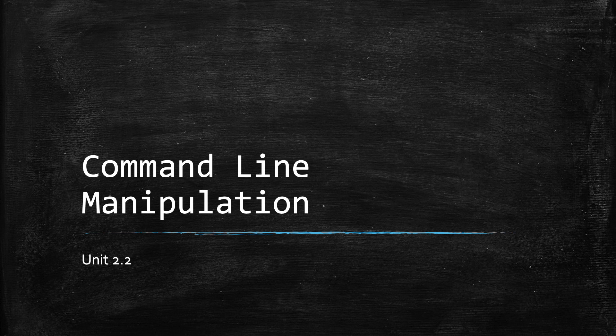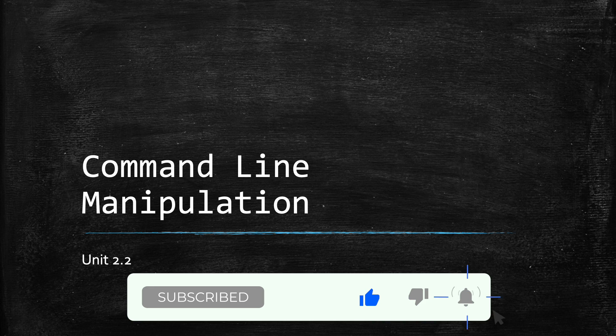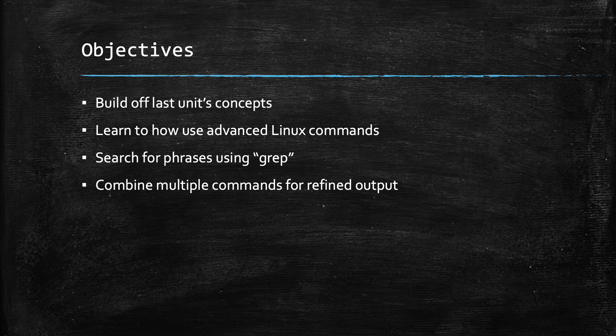All right, so let's go ahead and continue with unit two, lesson two. Today we're going to be talking about manipulation of data within the command line. We're going to build off of last time's concepts, and then we're going to use some more advanced Linux commands. The ones we're going to be covering today are very useful for manipulating data, searching for data, and outputting it in a way that we want to.